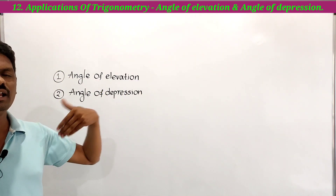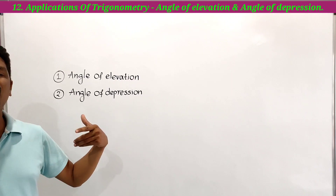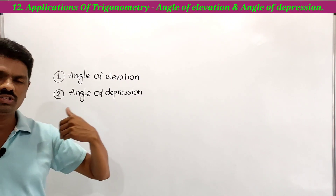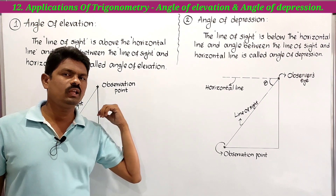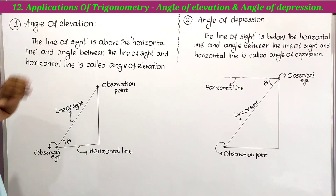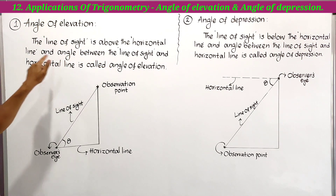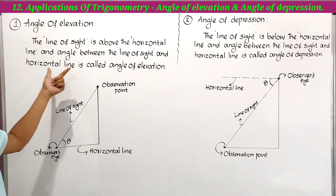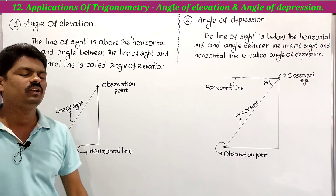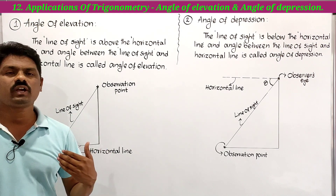So, what are those two angles? Let's define them. What is the angle of elevation? The line of sight is above the horizontal line, and the angle between the line of sight and the horizontal line is called the angle of elevation. So what is the line of sight? Let's understand that.